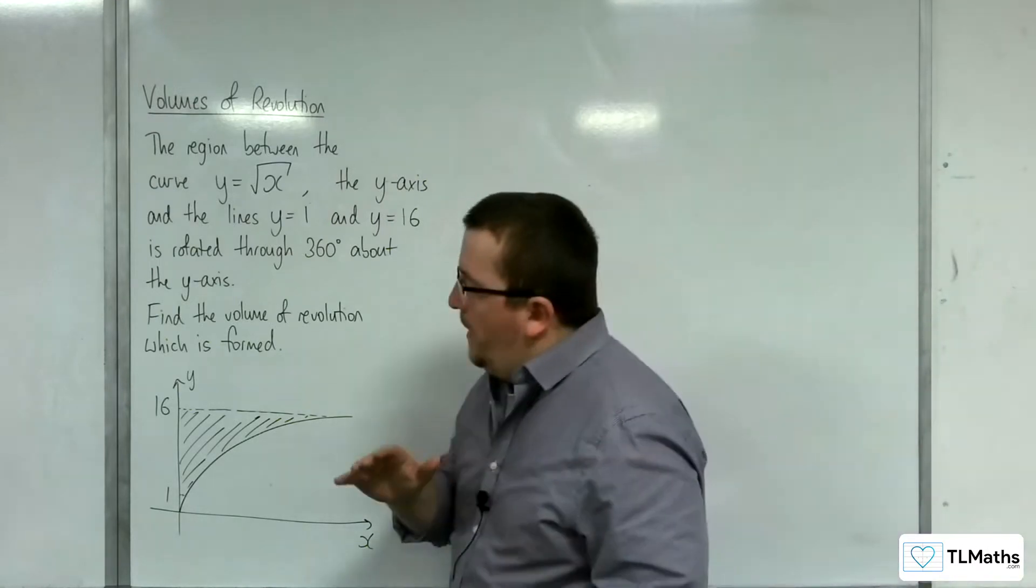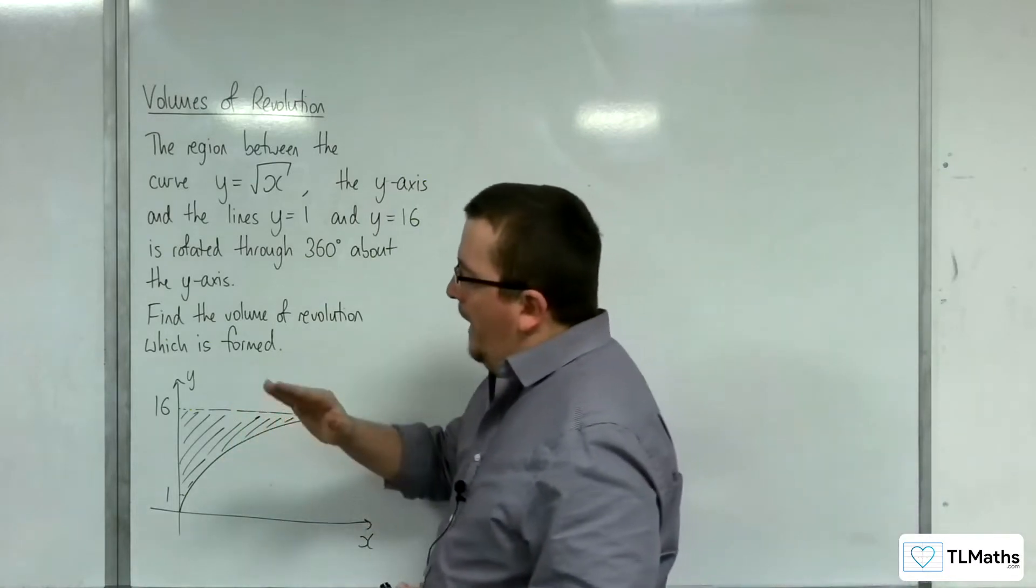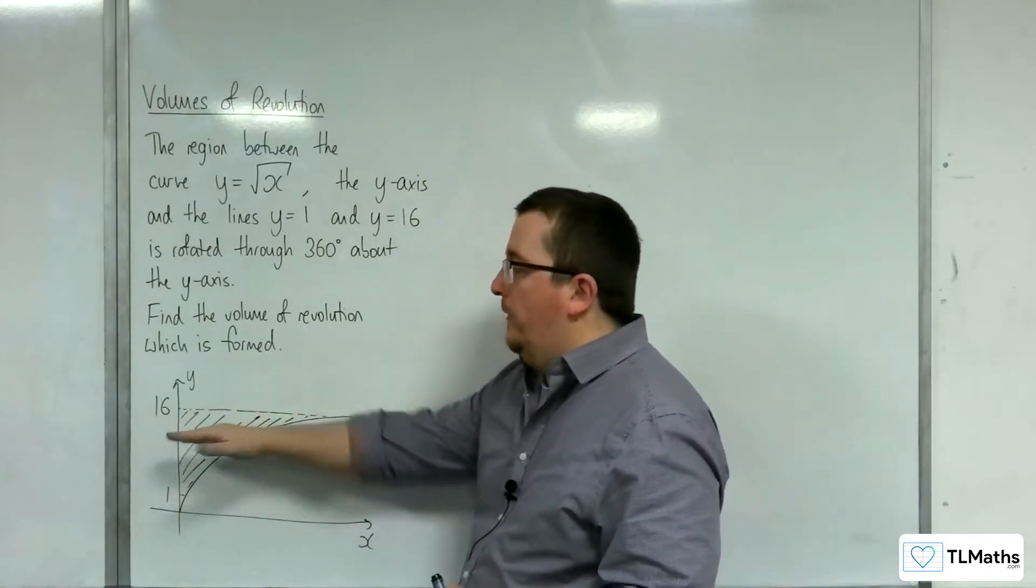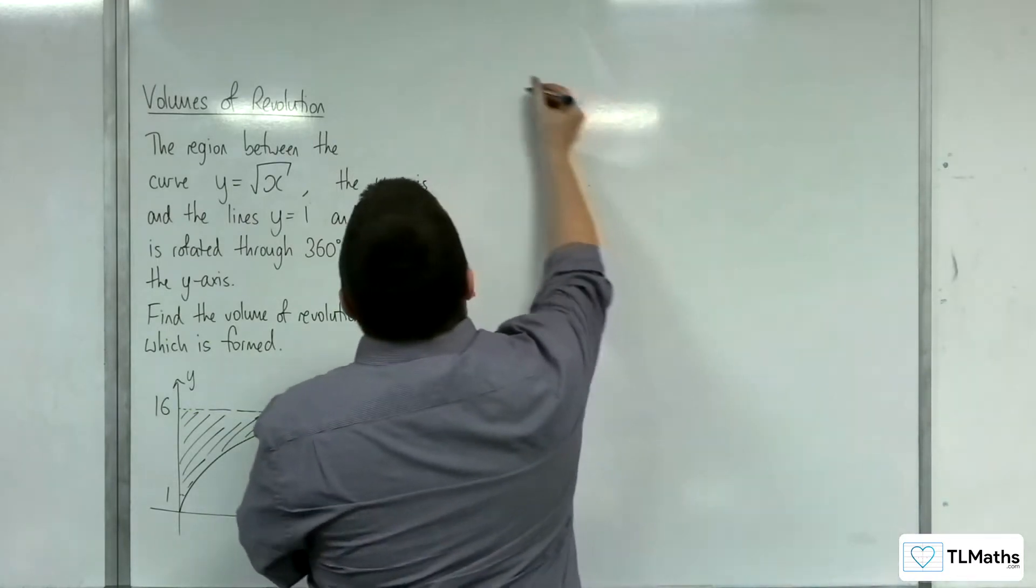Okay, so because we are revolving around the y-axis, we are going to be looking at pi x squared, because each of the radii will be based on the value of x at that point.